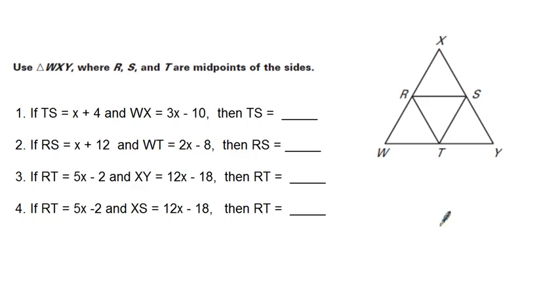All right, let's take a look at how you did. For number three, we want to look at RT and XY. So we're looking at the small segment, the mid-segment RT and the entire segment XY. So you want to say that because this is dealing with 2 times the length of RT has to equal the whole length XY, you want to say that 2 times 5X minus 2 equals 12X minus 18.